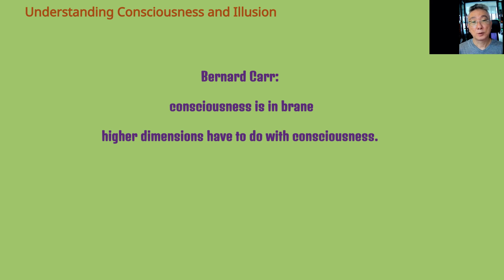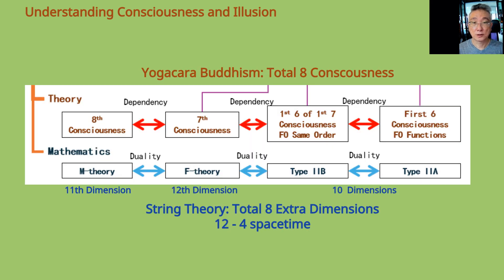Retired physicist and cosmologist Bernard Carr said he thinks consciousness is in branes and higher dimensions have to do with consciousness. The previous diagram shows there are six visual functions and six image functions for six consciousness, or what are called first six consciousness.